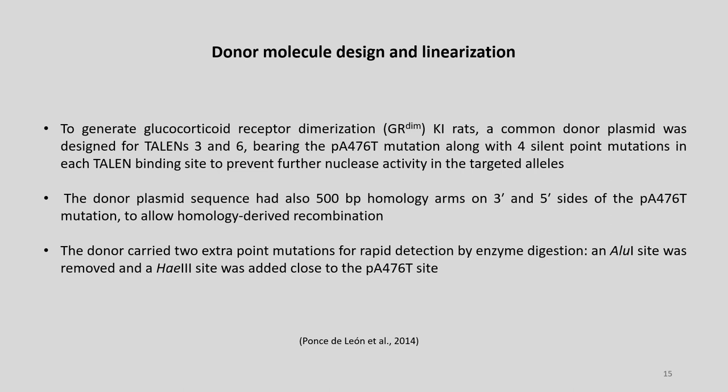For donor molecule design to generate glucocorticoid receptor dimerization (GRDM) knockin rats, a donor plasmid was designed for TAL3 and TAL6 bearing the PA476T mutation along with four silent point mutations in the TAL3 binding site to prevent further nuclease activity in the targeted alleles. The donor plasmid sequence also had 500 base pair homology arms on the 3' and 5' sites of the PA476T mutation to allow homology-directed recombination.